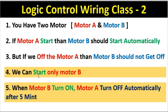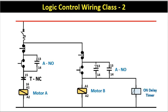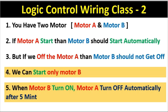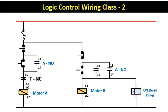Logic 4 asks to make a separate starter for motor B, which we already did. Logic 5 states that if motor B turns on, motor A should turn off automatically after 5 minutes. For this we used a timer, which operates with contactor B. On starting motor B, the countdown begins, and when it completes, the NC contact of the timer changes, turning off motor A automatically.